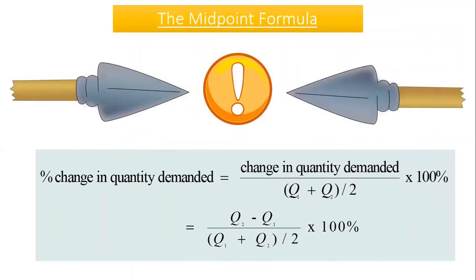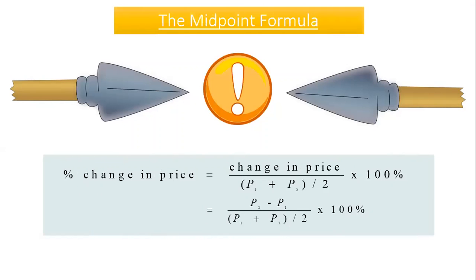To avoid this problem when going from one point to another — so that elasticity doesn't change with direction — economists sometimes use average percentage changes in both quantity and price. This is called the midpoint method for elasticity. The change in the denominator is no longer the initial value; instead, you divide by the average: (Q1 + Q2) / 2 for quantity, and (P1 + P2) / 2 for price, rather than dividing only by P1.